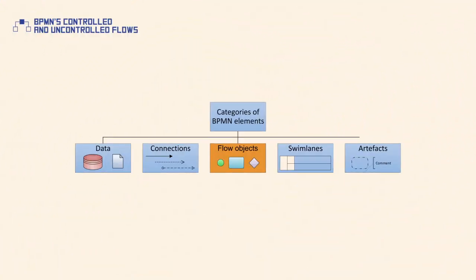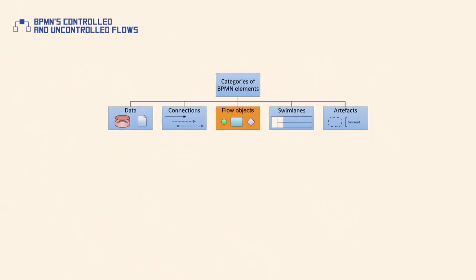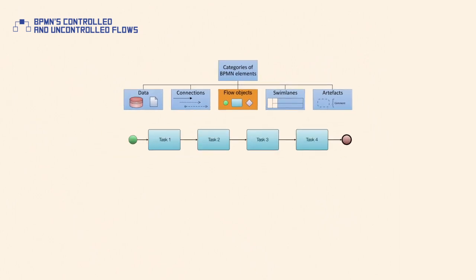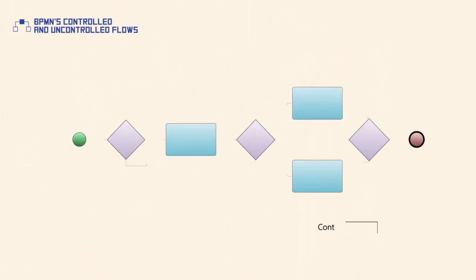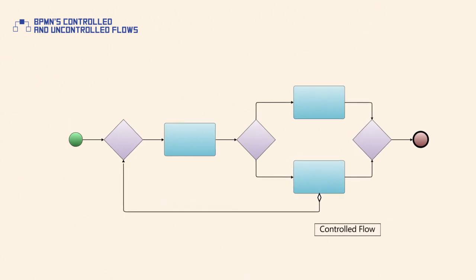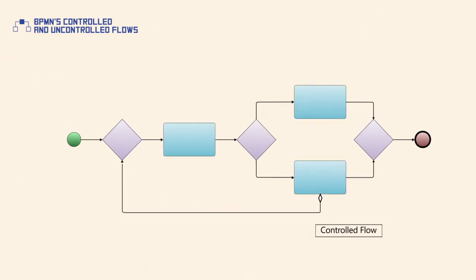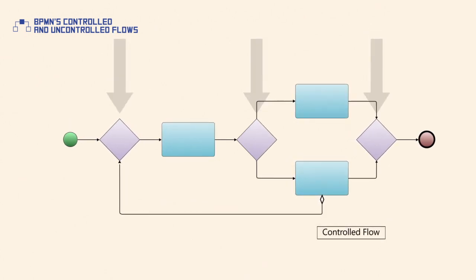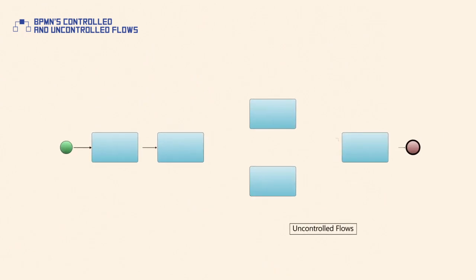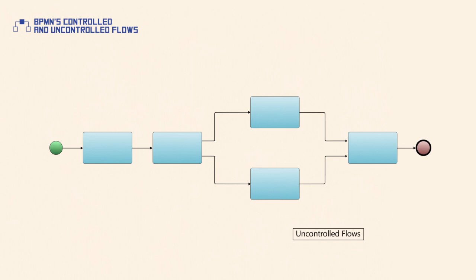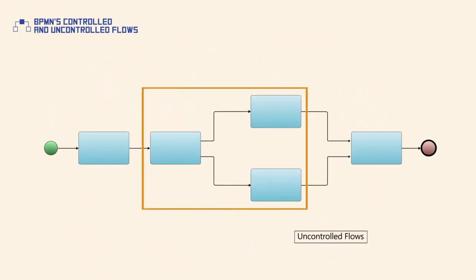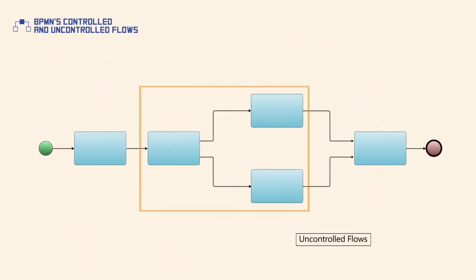In BPMN, process performance is represented with a sequence of flow objects with controlled or uncontrolled flows representing the convergence or divergence of process paths. A controlled flow represents a flow that proceeds from one activity to another but is subject to conditions as defined by a gateway. Uncontrolled flows proceed without dependencies or conditional expressions. Typically, an uncontrolled flow is a sequence flow between two activities that don't have an intervening gateway.